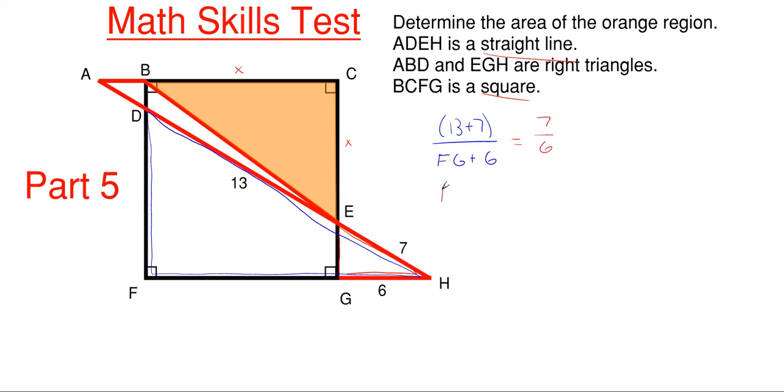So rearranging here for FG, we get 20 times 6 divided by 7, and then subtract off 6, and that gives us approximately 11.14 units of length for this FG right here.